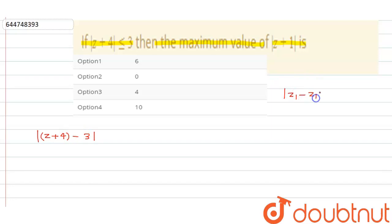So we know one thing: what mod of z1 minus z2 less than equal to, this will be what, mod of z1 plus mod of z2, okay.